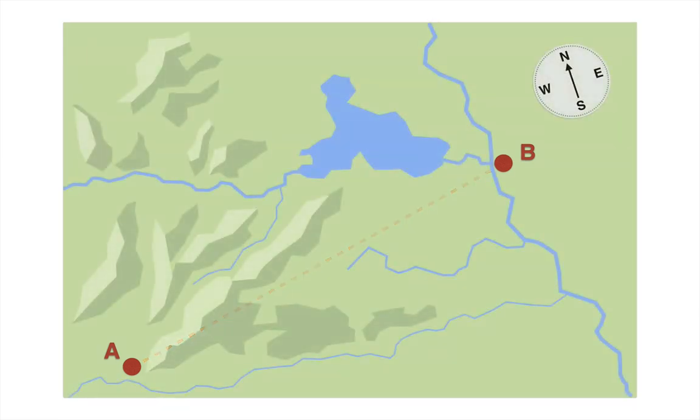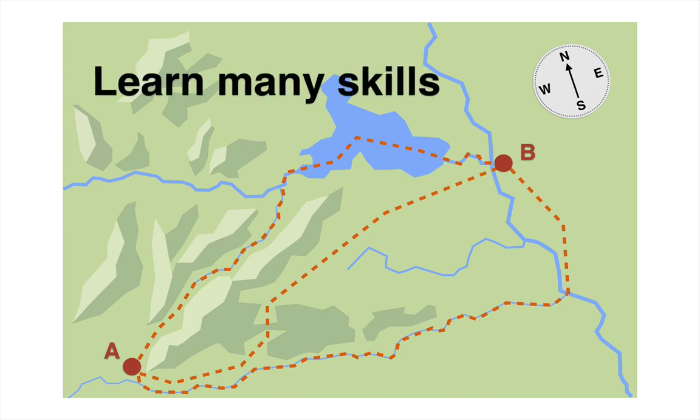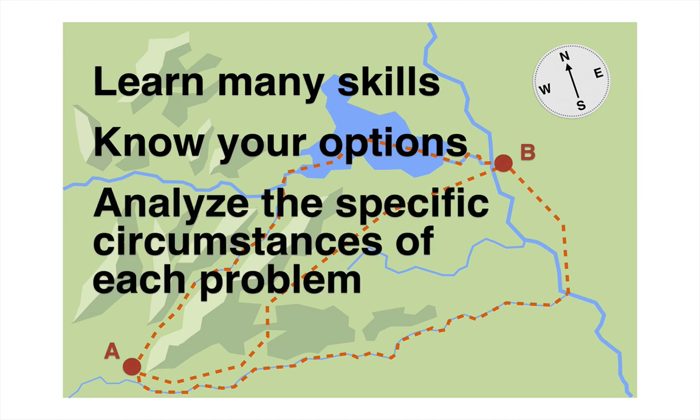So a useful thing to remember is that solving a math problem might seem like going from A to B. But it's never just one route that you want to think of. You've got to know the lay of the land. It's possible that you might have many options, and one option is going to be preferable to another depending on the circumstances. So the general lesson here is to learn many skills, know your options, and analyze the specific circumstances of each problem so you can pick out the best route for you.